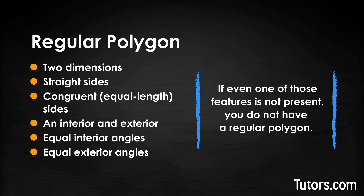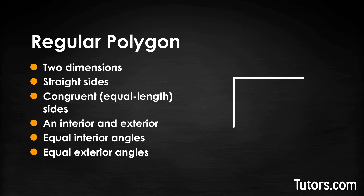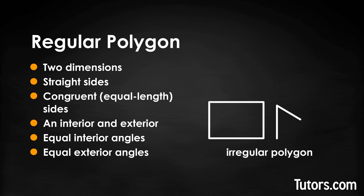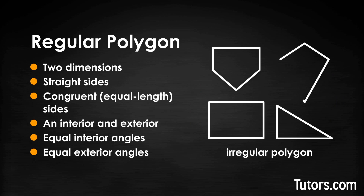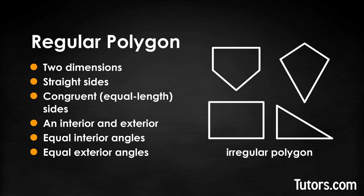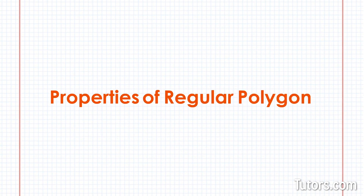You may have three of the features — two dimensions, straight sides, and an interior and exterior — but still not have a regular polygon; you would have an irregular polygon. A rectangle that is longer than it is tall is an example of an irregular polygon. A scalene triangle, home plate on a baseball or softball field, and a kite are all also examples of irregular polygons.